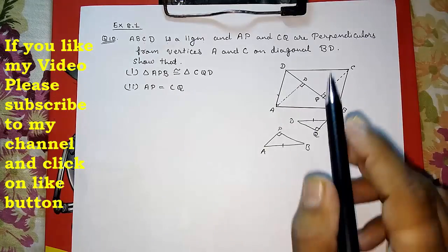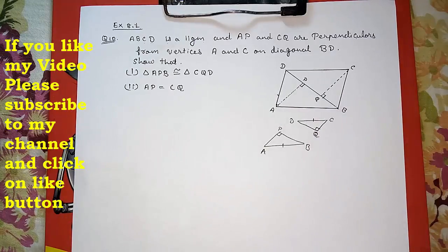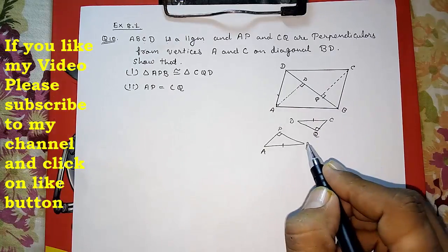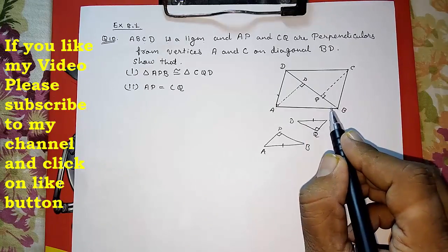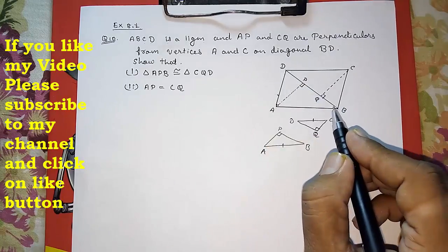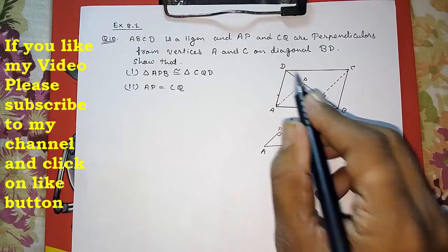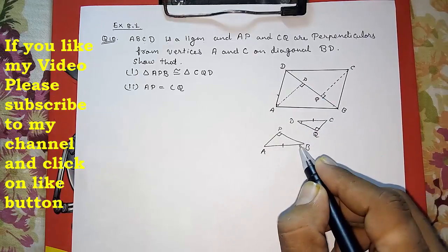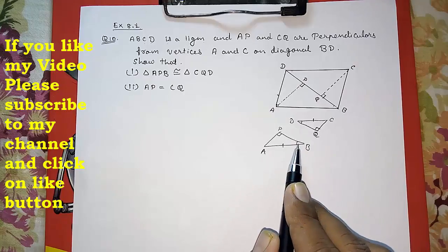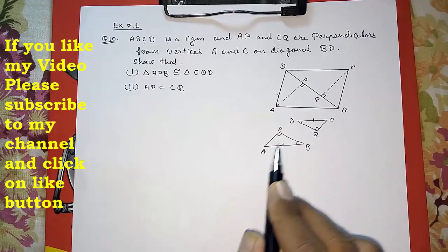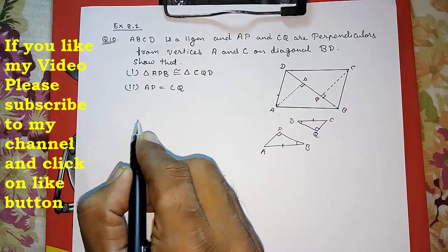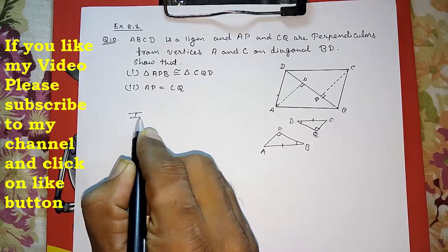And the third thing remaining - yes, these two are also equal, this angle and this angle. Why? Alternate interior angle. So I can say this angle and this angle are also equal by alternate interior. So we got three things. So I am going to write it here in triangle APB and triangle DQC.